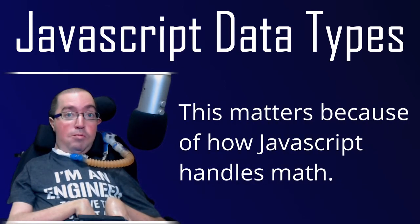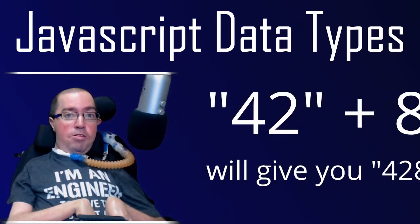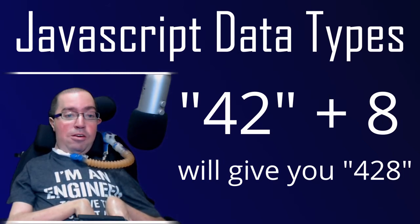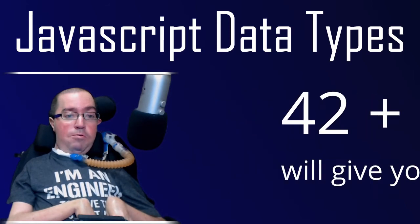One of the main reasons this matters is if you try to do math on different data types. For example, if you try 42 with quotation marks plus 8, you'll get the string 428, because JavaScript simply appends things to the end of a string when you try adding them together — it's the same as saying, take this string and whatever is next to it and make it into one string. If, however, you try 42 plus 8, you'll get 50, like you would expect, because you can do math on number data types the same way you would on a calculator.